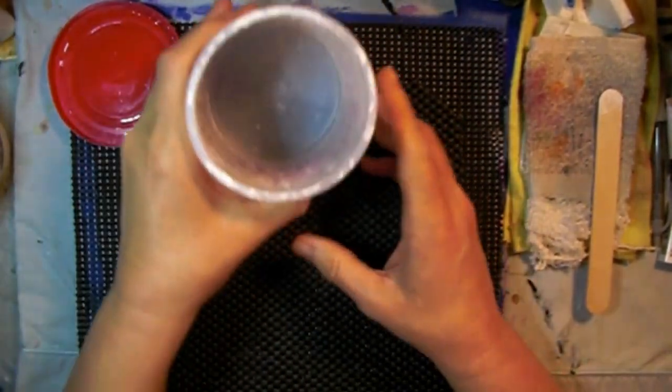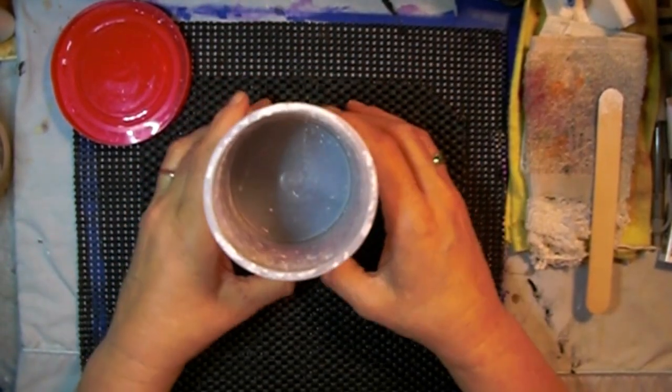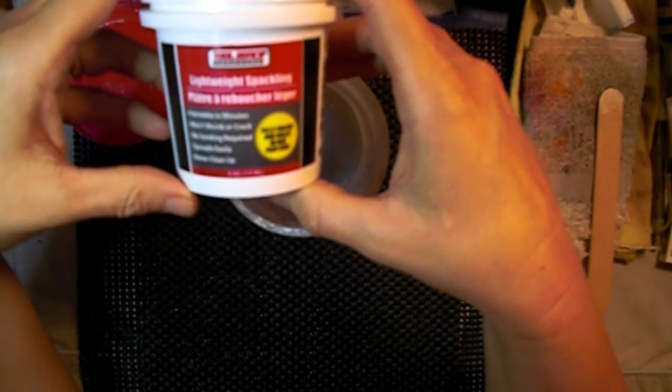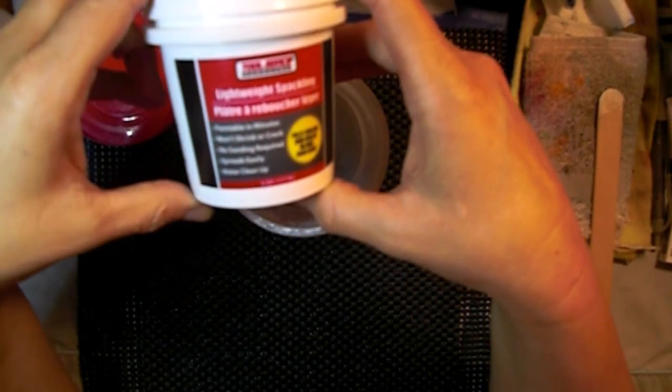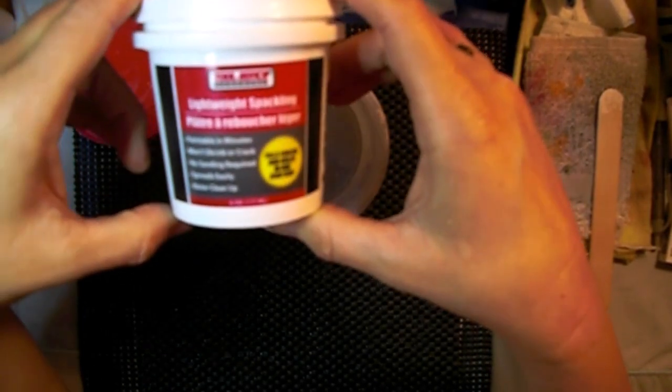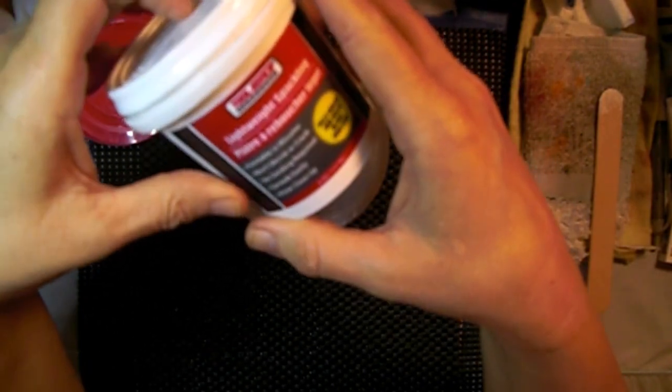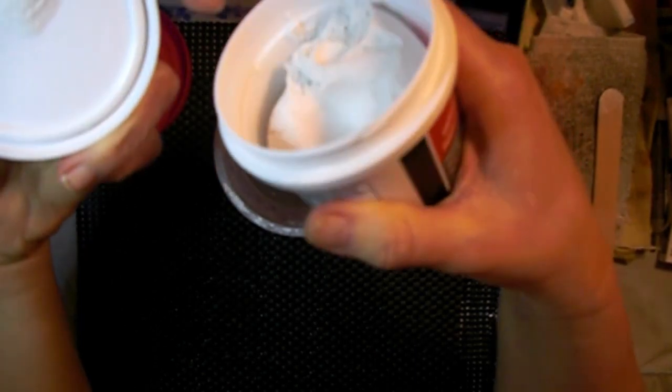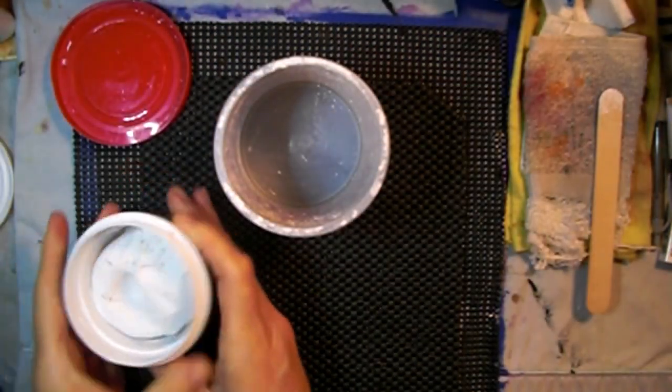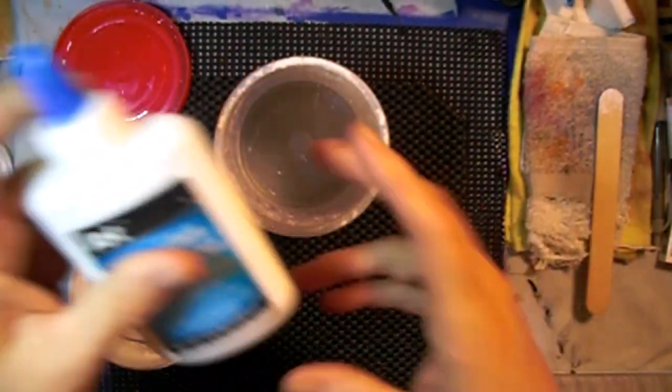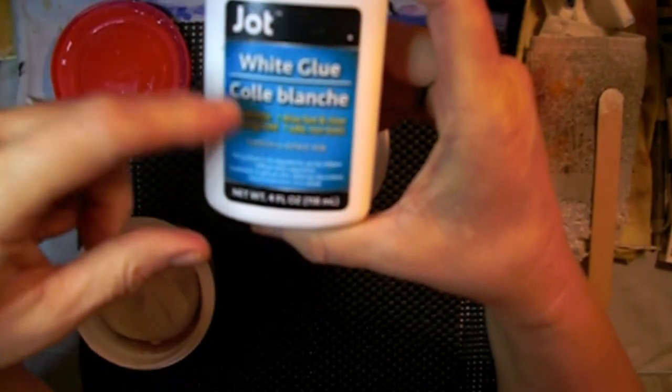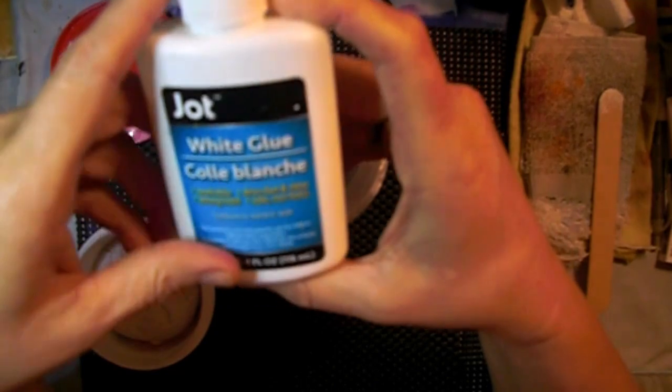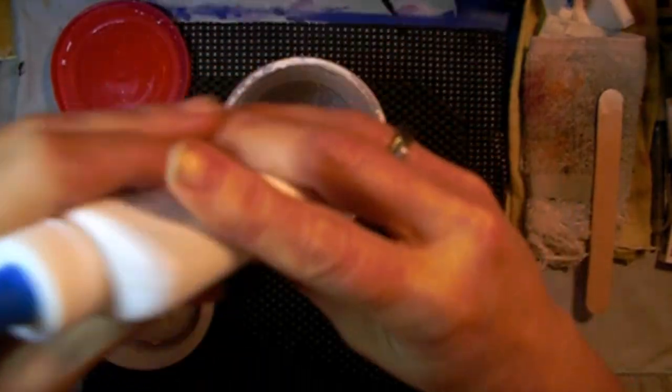And at the dollar store they have the sparkling paste, the lightweight stuff. So I'm gonna use about half of this to about a half a container at first, for the PVA glue that you can get at the dollar store as well.